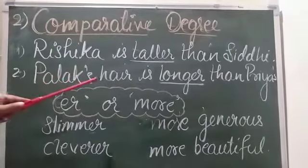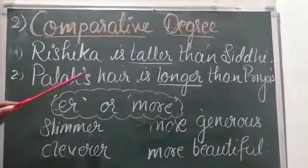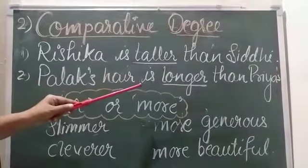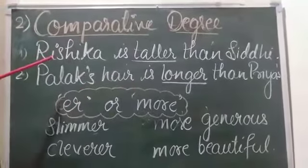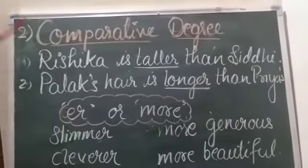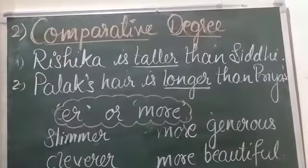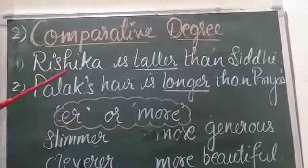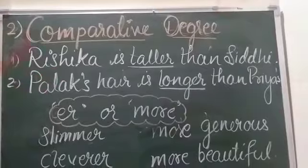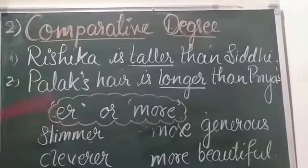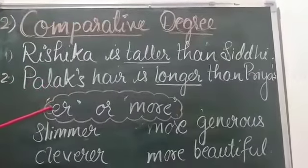Here, Palak's hair is longer than Priya's. Palak's hair has greater length than Priya's hair. When words, persons, places, or things are different in some way, those words come under comparative degree.